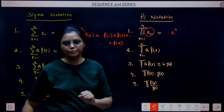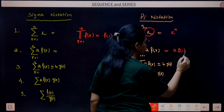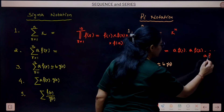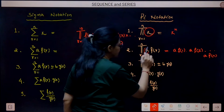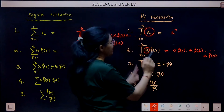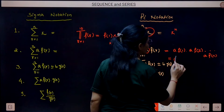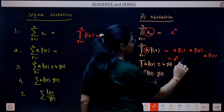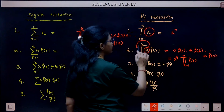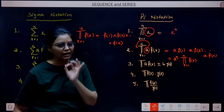For pi of [A·F(r)], when you move constant A outside, it becomes A^n · pi(F(r)), because r takes n different values, so A is multiplied n times. Keep this in mind: in sigma, a constant multiplicative factor comes out as itself; in pi, it comes out as A^n. Also, in pi notation, you cannot separate addition or subtraction — that would be wrong. However, multiplication and division CAN be separated: pi of [F(r)·G(r)] = pi(F(r)) · pi(G(r)).